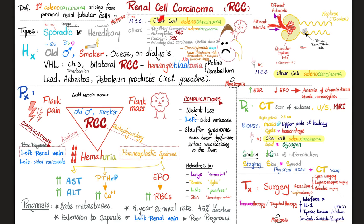On to today's topic — renal cell carcinoma. It arises from proximal renal tubular cells, as we discussed. The most common subtype is clear cell adenocarcinoma. When you look under the microscope, the cells are very clear — there is no gunk inside.